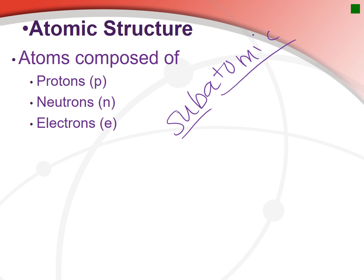We have three subatomic particles we're going to focus on: protons, neutrons, and electrons. A proton is written as P positive, neutron as N zero, and electron as E with a negative. These reference their charges — protons are positive, neutrons are neutral or have no charge, and electrons have a negative charge.